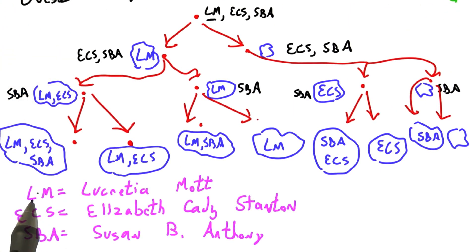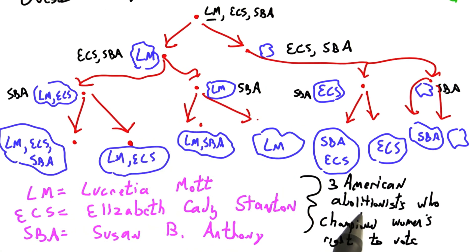In this particular running example, my three friends that I invited for dinner, LM, ECS, and SBA, were Lucretia Mott, Elizabeth Cady Stanton, and Susan B. Anthony, three American abolitionists who opposed slavery, who then went on to champion women's right to vote.